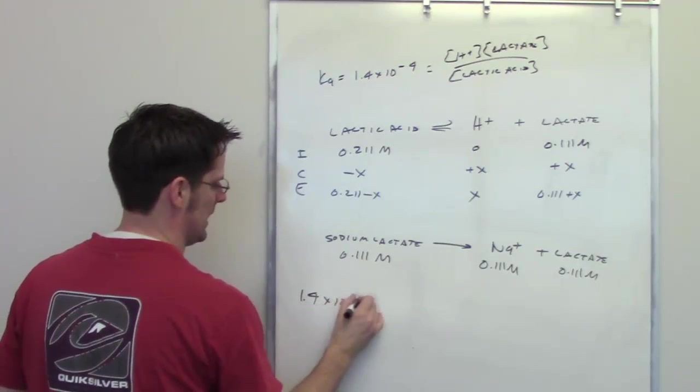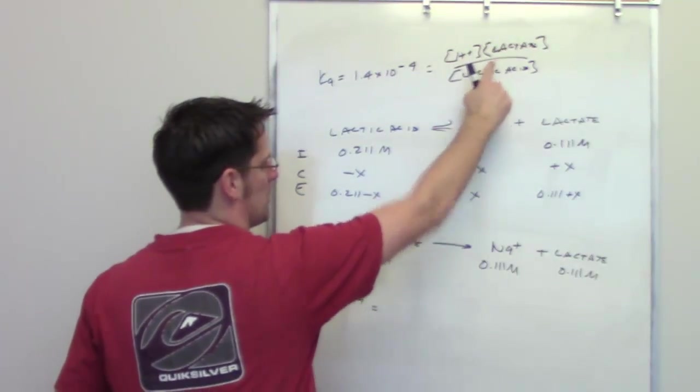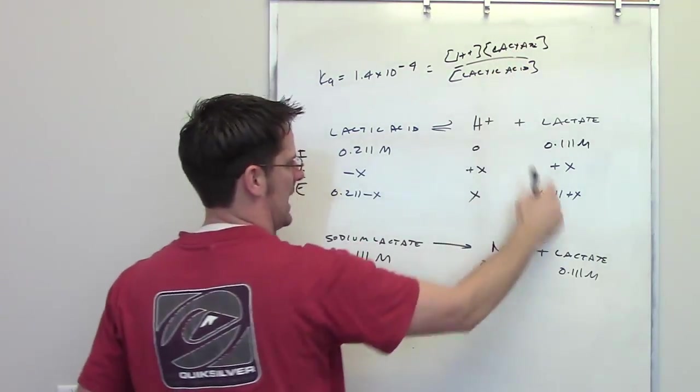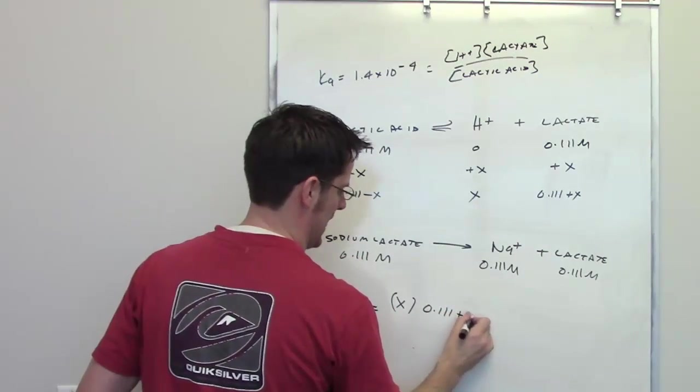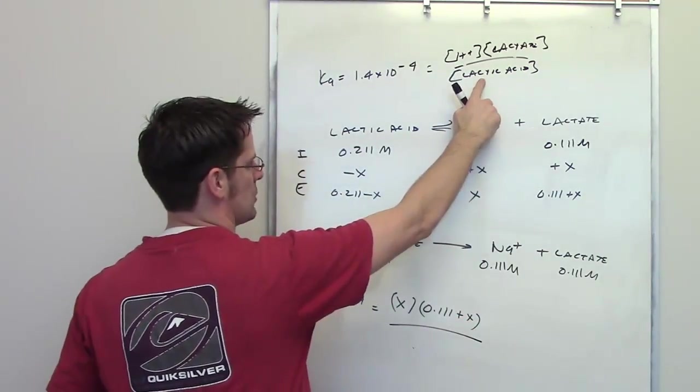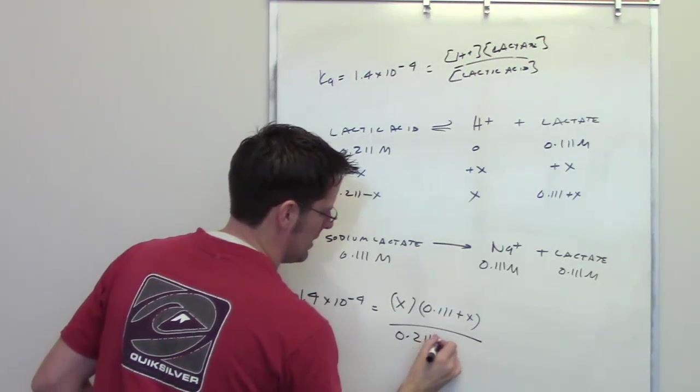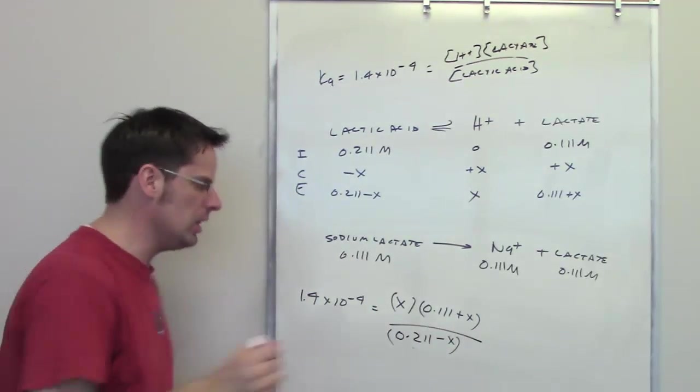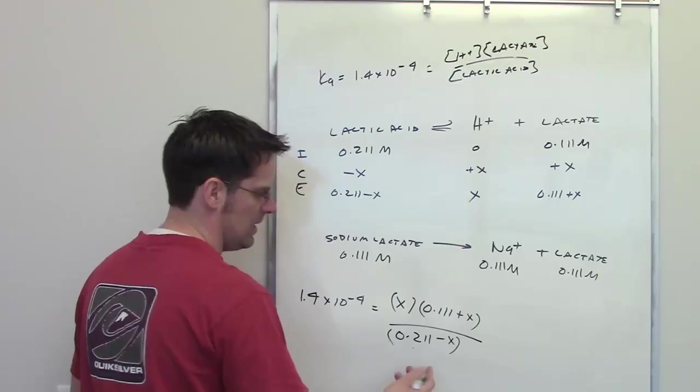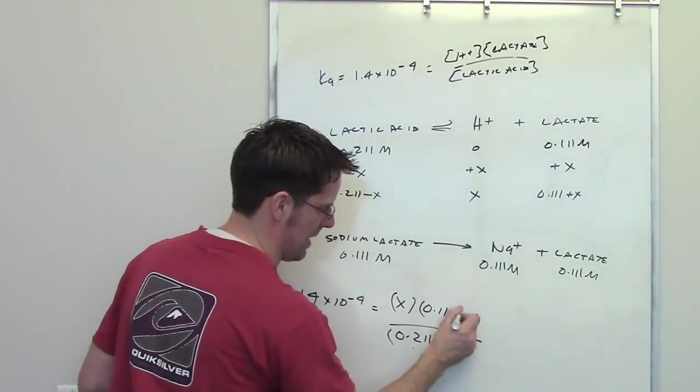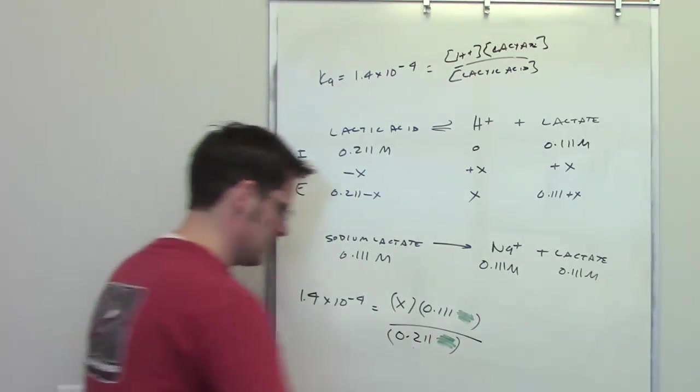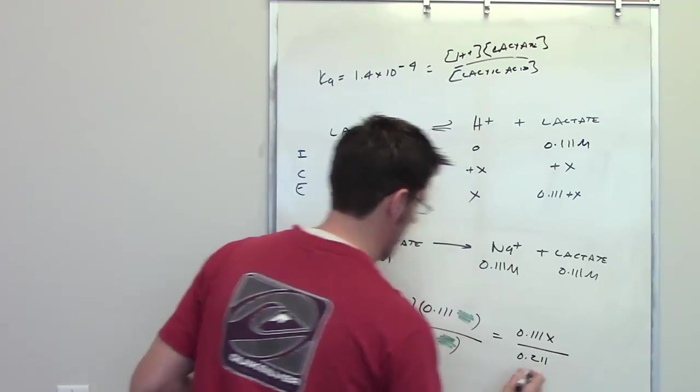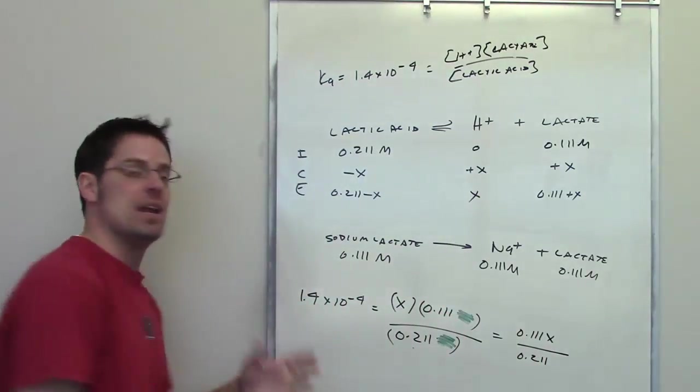So the Ka is 1.4 times 10 to the negative 4th. And I set that equal to this expression, H+ at equilibrium is equal to X. The concentration of lactate is 0.111 plus X at equilibrium, and that's going to be divided by the equilibrium concentration of lactic acid, which is 0.211 minus X. Now, as I've told you in other videos, these X values are going to be so small relative to the 0.11 and the 0.211 that I can just throw them out to simplify things. So I'll just cross them out, pretend that they're not there, simplify this expression to be 0.111X divided by 0.211. That is also equal to this number. Now I solve for X.